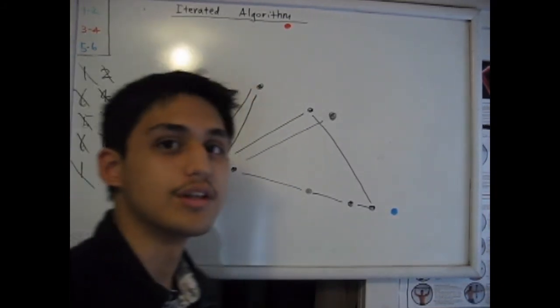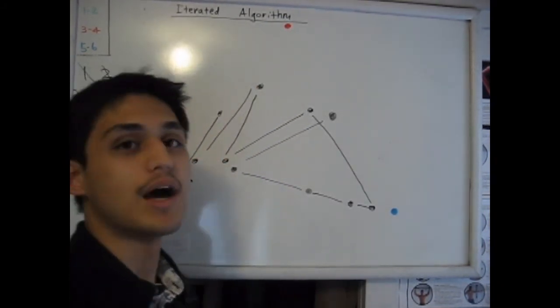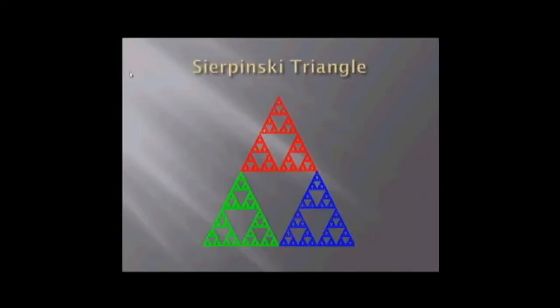Now if you keep doing this, you're going to find out it will make a pattern, a shape. Using a computer and doing what I just did earlier millions of times, you get what's called a Sierpinski triangle.